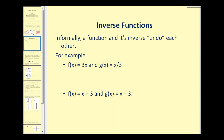Now let's talk about what an inverse function is. Informally, a function and its inverse undo each other. For example, f of x equals three times x and g of x equals x divided by three — multiplying by three and dividing by three are opposite operations and therefore undo each other. Therefore, f of x and g of x are inverses of one another.